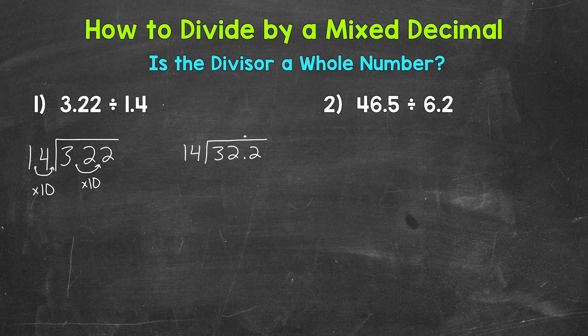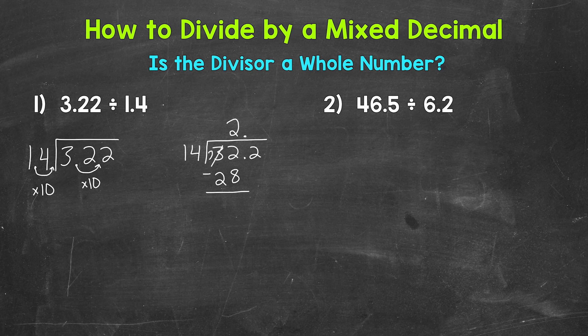Let's go through the division process, starting with divide. We have 3 divided by 14 — we can't do that, so we use the 2 and look at 32. How many whole groups of 14 in 32? Well, 2 — that gets us to 28. So the 2 goes above the 2 in 32, since we used both the 3 and the 2. Multiply: 2 times 14 is 28. Subtract: 32 minus 28 equals 4. Then we bring down, giving us 42.